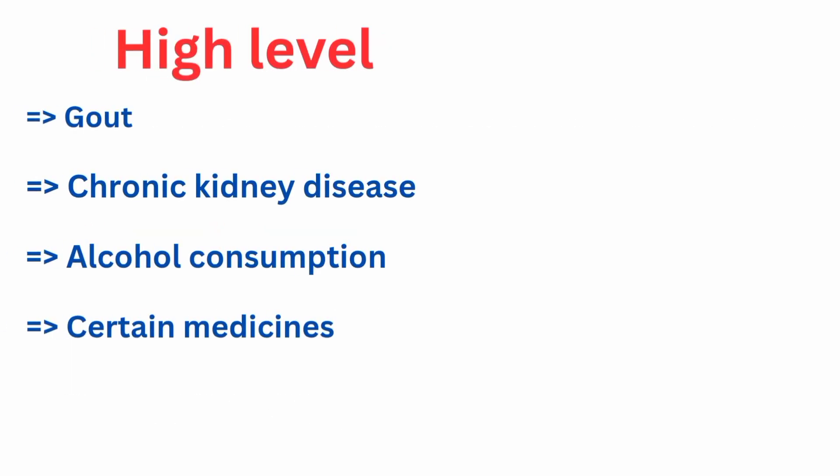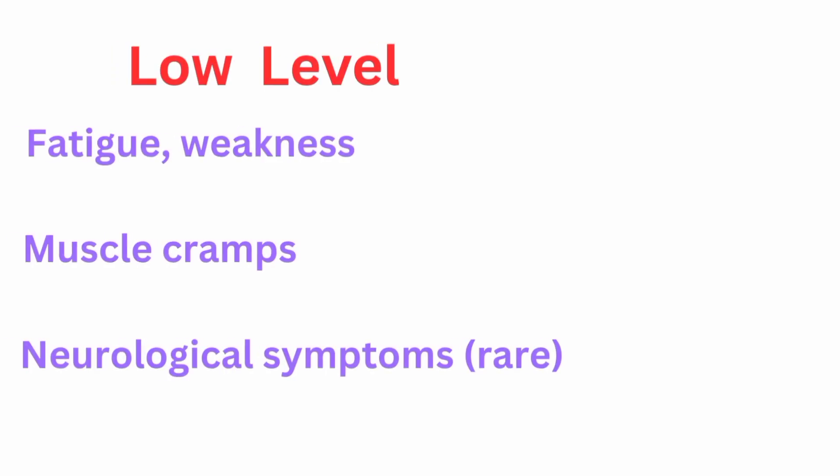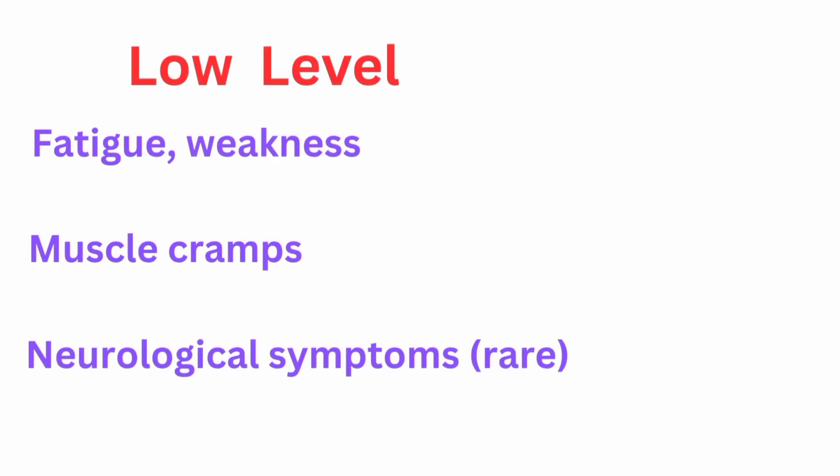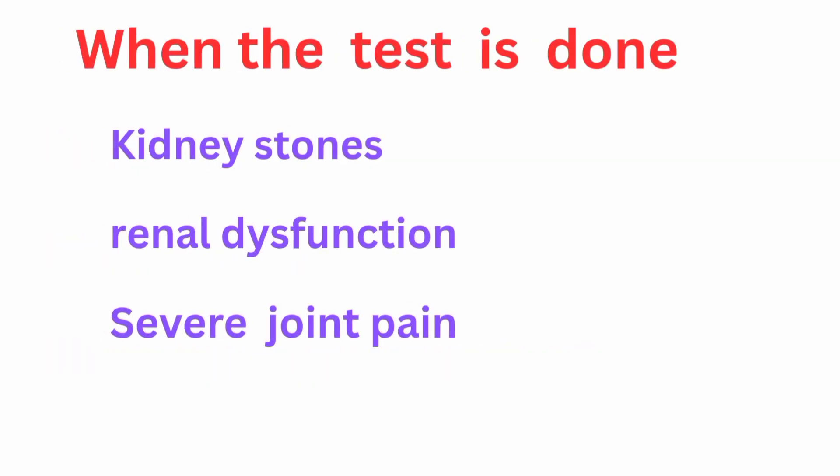High uric acid levels are seen in gout, chronic kidney disease, alcohol consumption, and certain medicines. Low uric acid level symptoms include fatigue, weakness, muscle cramps, and neurological symptoms in rare conditions. When the test is done: symptoms include kidney stones, renal dysfunction, and severe joint pain.